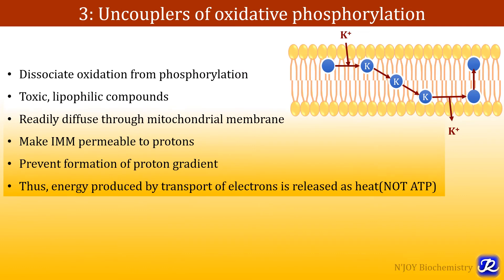The uncouplers of oxidative phosphorylation — uncouplers uncouple or dissociate oxidation from phosphorylation. These uncouplers are toxic lipophilic compounds which readily diffuse through the mitochondrial membrane and make the inner mitochondrial membrane permeable to protons. Because of this permeability, protons can cross the inner mitochondrial membrane into the matrix, preventing formation of a proton gradient. With no proton gradient, there is no phosphorylation or ATP synthesis, and the energy produced by electron transport is released as heat.